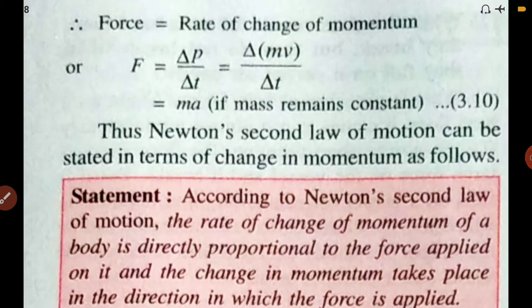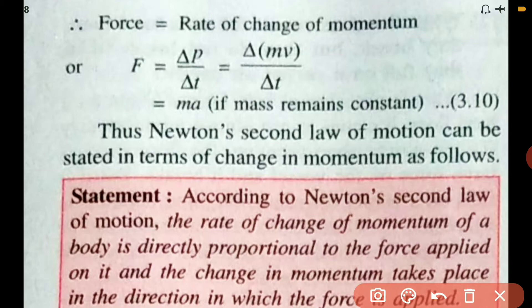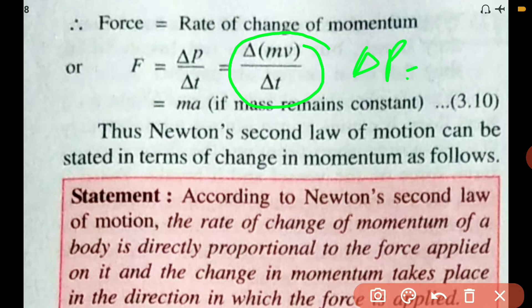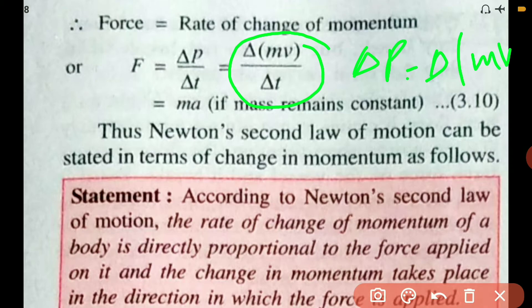Force equals rate of change of momentum, or F equals dP/dt. So I can write F equals d(MV)/dt, because dP — if you remember — it was d(M multiplied by V). Which is equal to mass into acceleration, if mass remains constant. Remember: if mass remains constant.